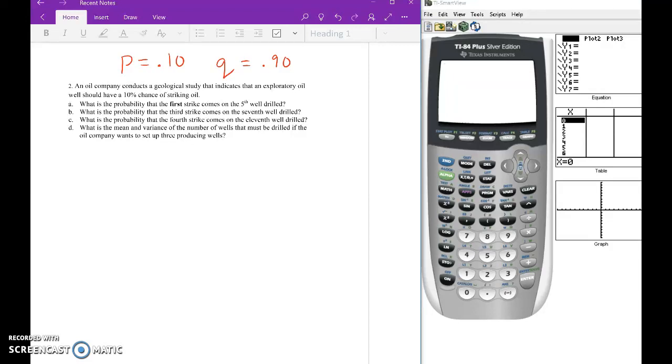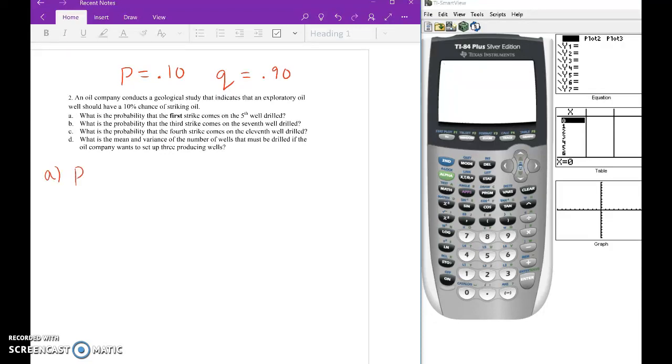All right, so here's our P and Q for the negative binomial. So look at letter A. What's the probability the first strike comes on the fifth well drilled? So I'll write it as the probability. The first success is on the fifth try. Now, when you talk negative binomial and geometric, I like to think of it as how many times did I lose before I won? So if you consider winning finding the oil well, and the first time that happened was on your fifth try, that means the other four times you failed.